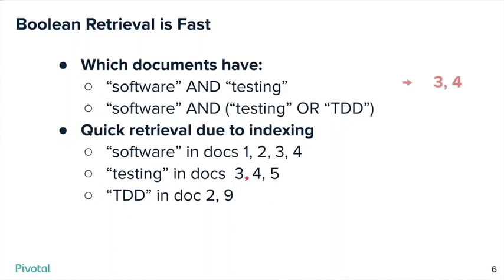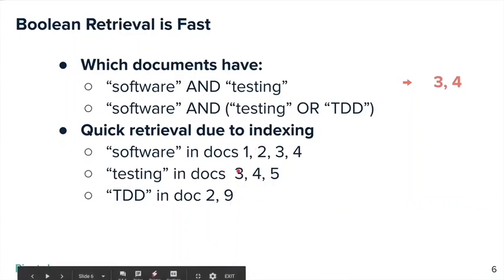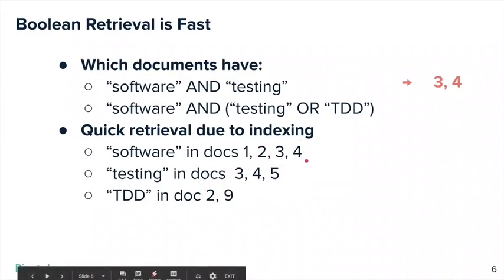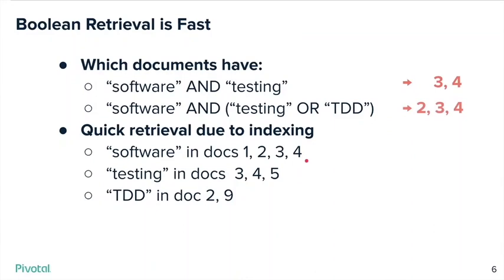If you're trying to expand it and say 'software AND either testing OR TDD,' then testing OR TDD gives you documents 2, 3, 4, 5, and 9. When you get the overlap with software, it's documents 2, 3, and 4. So very quickly, you can figure out that in the second case you're starting out looking at documents 2, 3, and 4.